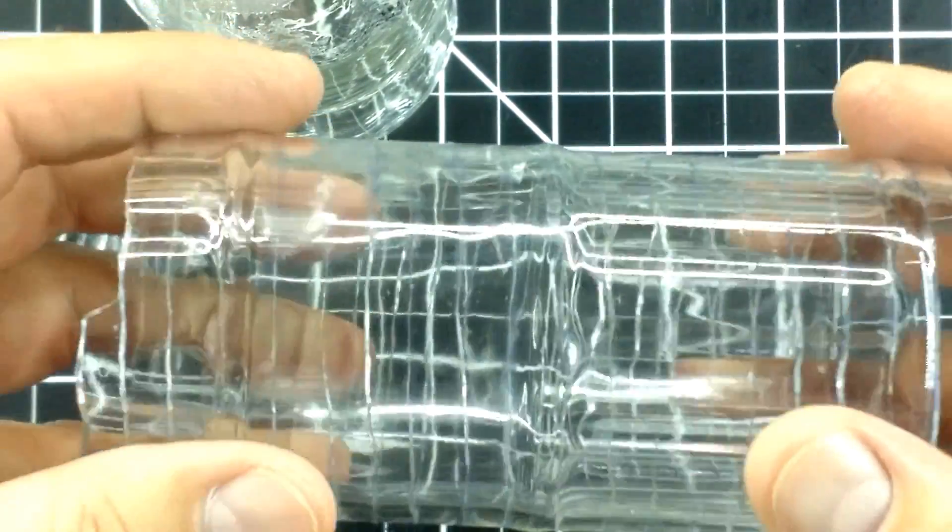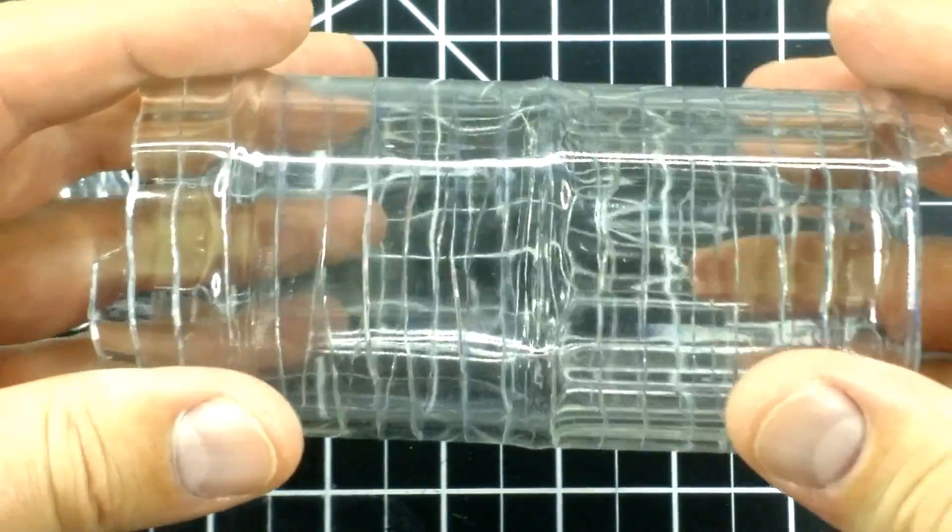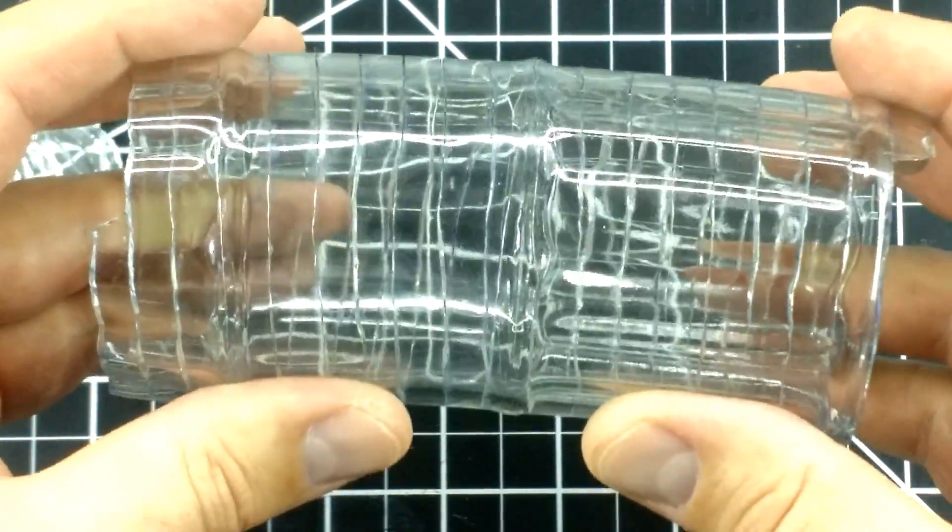Originally, I was going to show you how to cut a spiral along an entire glass bottle. Although it's not very useful, it is pretty cool because it kind of acts like a spring.